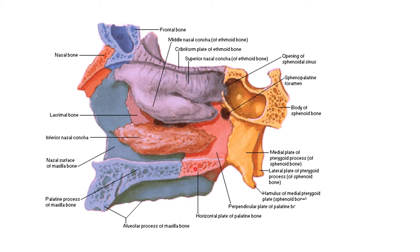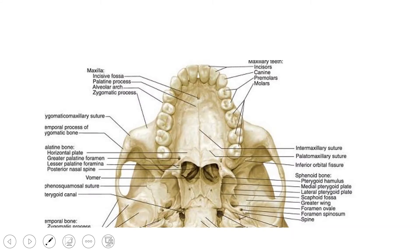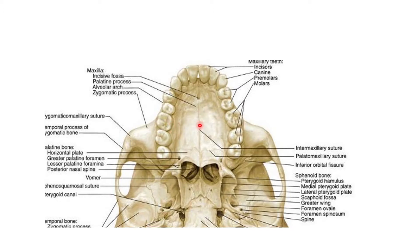When we talk about the formation of the hard palate, it is called 'hard' as it is completely bony in nature, formed entirely by bones. The formation of the hard palate is divided into anterior two-thirds and posterior one-third by a suture in between. The anterior two-thirds of the hard palate is formed by the palatine process of the maxilla on either side.